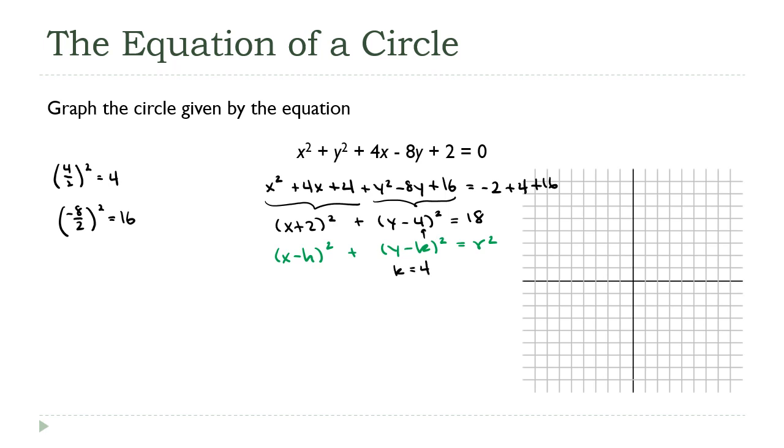Here, the signs are reversed. So you can think of this as x minus minus 2. Now, hopefully, it's clearer that h actually has the opposite sign. h is going to be negative 2. So my center is at negative 2 comma 4.